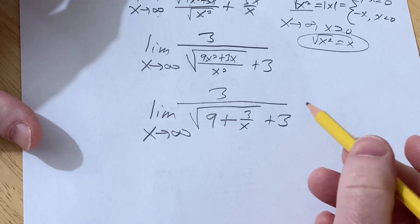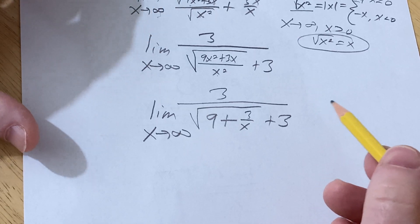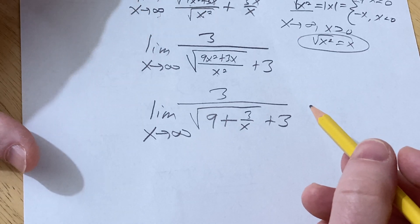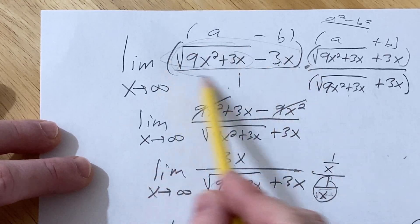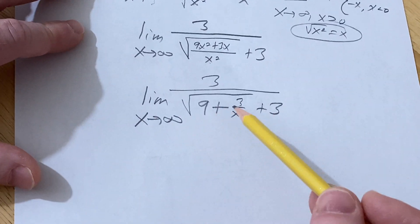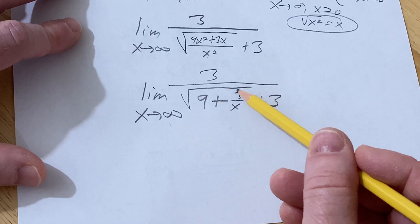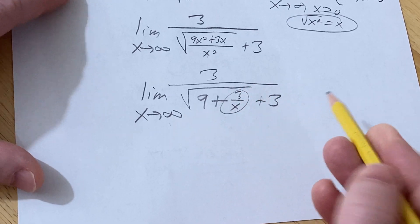And so now we're in a place where it's much easier to see what the limit is going to be, right? Because initially at the beginning of the problem, this was not super clear. Like what is this limit, right? So now it's a little bit easier to see because when x is approaching infinity, you can clearly see that 3 over x approaches 0.